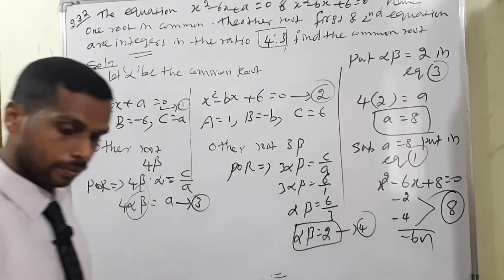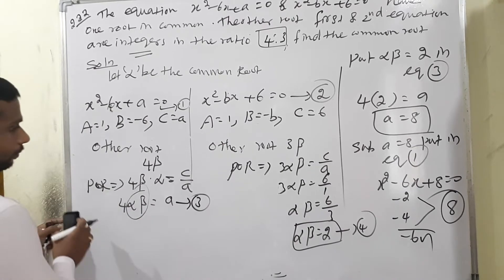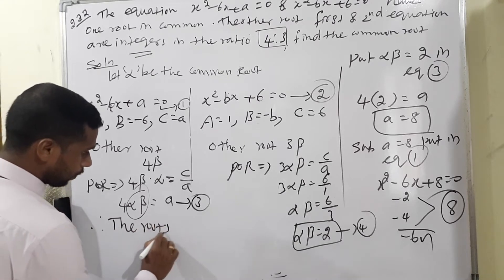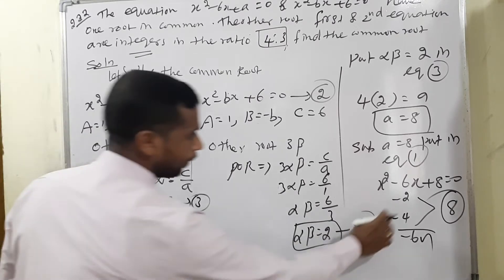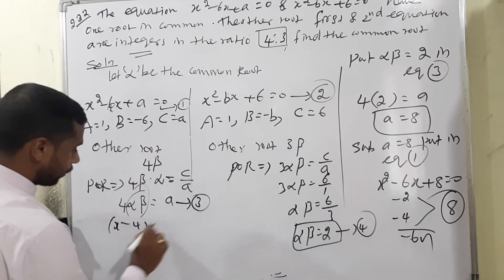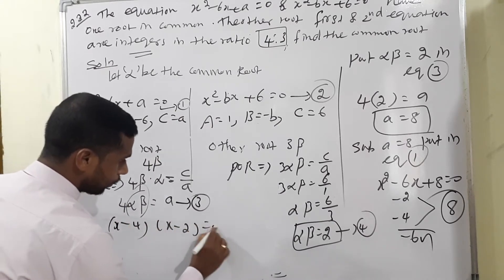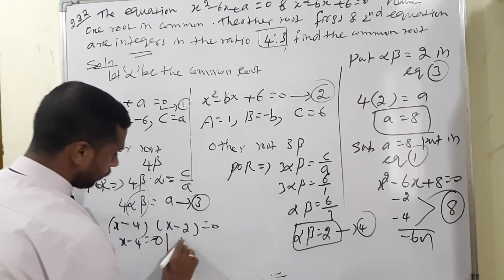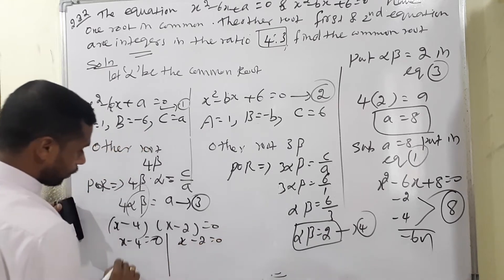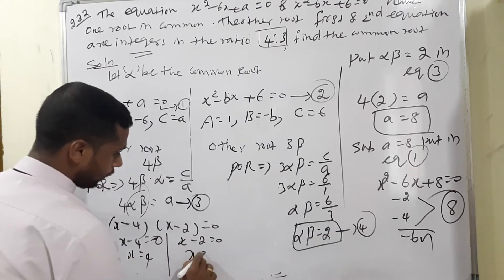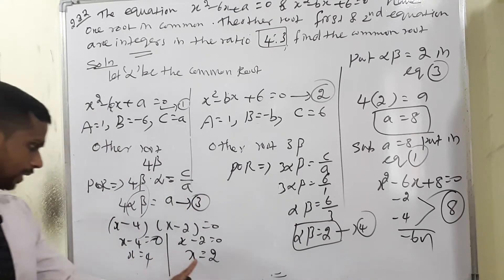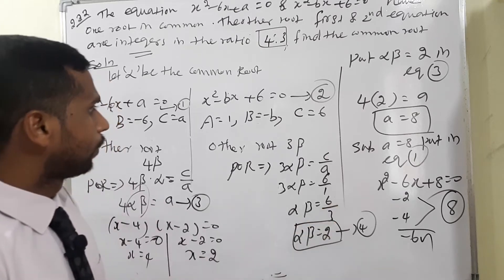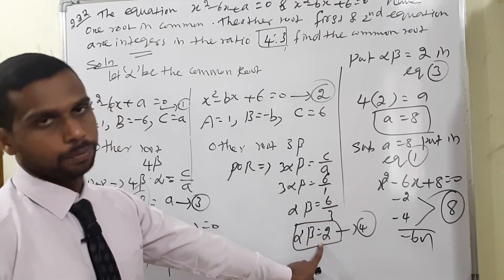The equation factors as (x-4)(x-2) = 0, giving x = 4 and x = 2. Now we check each root using equation 4 (alpha·beta = 2), because the condition requires integers. Take alpha = 4: then 4·beta = 2, so beta = 1/2, which is not an integer.